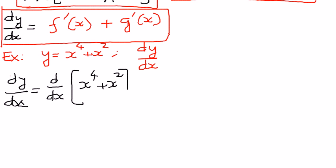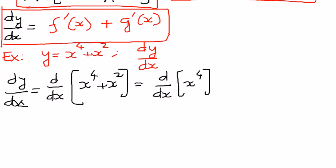Since we have two functions, we can differentiate them separately like this: d by dx of x to the power of 4, plus d by dx of x to the power of 2, like that.